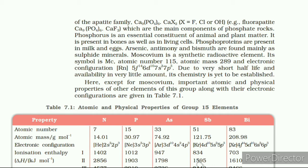Arsenic, antimony, and bismuth are found mainly in sulfide minerals. Moscovium is a synthetic radioactive element; its symbol is Mc, atomic number 115, atomic mass 289, and electronic configuration [Rn] 5f¹⁴ 6d¹⁰ 7s² 7p³. Due to its very short half-life and availability in very little amount, its chemistry is yet to be established. Except for moscovium, important atomic and physical properties and trends of other elements of the group are discussed below.